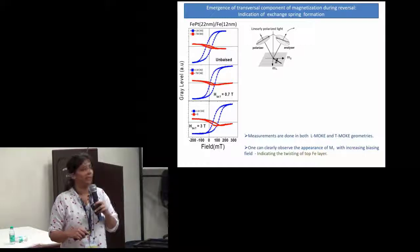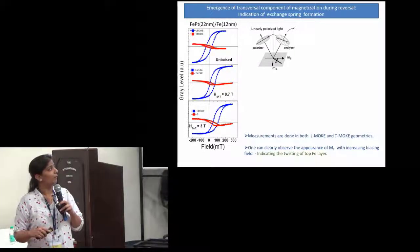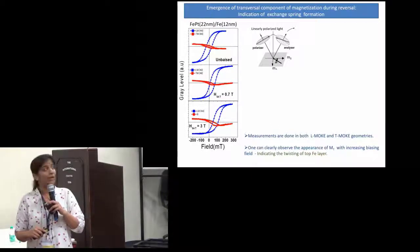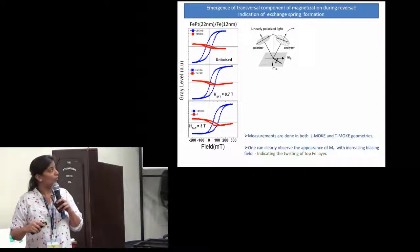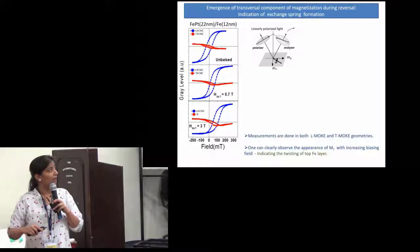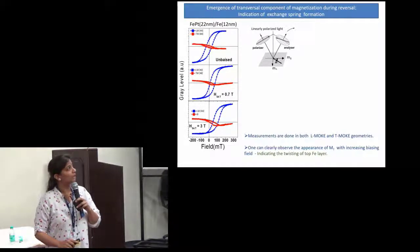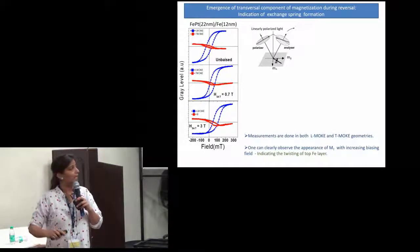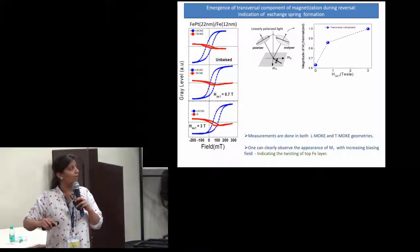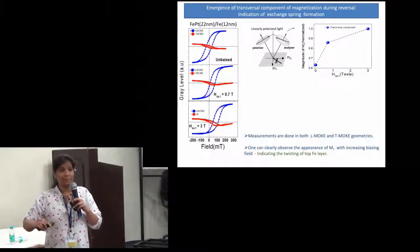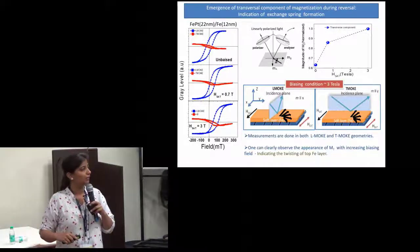In this particular bilayer system — where the FePt was 22 nm and iron was 12 nm — we tried to measure the transversal component with different biasing fields. This was the unbiased condition, and this is the biased condition where we applied 0.7 tesla, and then we increased the biasing further. We measured the longitudinal component, which is parallel to the biasing field, and the transversal component. We observed that the transversal component increases with the saturating field.